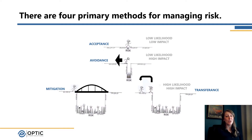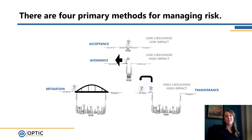Mitigation is whenever we decide we need to keep moving in this direction — we deal with a lot of tornadoes, we know we deal with a lot of paper, so we're going to have to build a safer building or build a bridge to cross our chasm. Transference is where we look at other ways to offset that risk — in a lot of cases we see this as cyber insurance, where we know if something were to occur it would be bad, we can't avoid it, we're not willing to accept it, there's not a great way to mitigate it, so we simply transfer that risk to someone else.